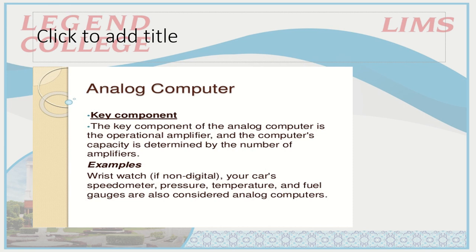For example, we have wrist watches, your car speedometer, pressure gauges, temperature gauges, and fuel gauges. These are all examples of analog signals.